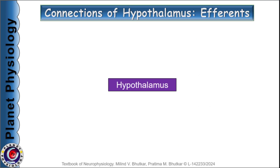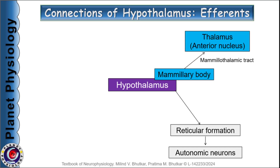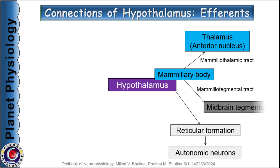Efferent fibres from the anterior nucleus of the hypothalamus terminate on parasympathetic neurons, and from the posterior nucleus on sympathetic neurons in the brainstem and spinal cord via reticular formation — thus the hypothalamus regulates the activity of the autonomic nervous system. The next important efferent is the mammillothalamic tract, an important component of the Papez circuit, which transmits signals from the mammillary bodies to the anterior nucleus of the thalamus. The mammillary body also gives efferents to the tegmentum of the midbrain via the mammillotegmental tract, and efferents from the hypothalamus are also given to various components of the limbic system.